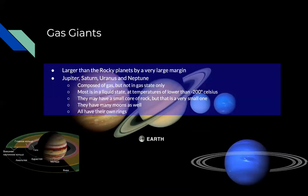Moving on to the gas giants. These are much bigger than the rocky planets by a big margin. You can see in this background picture that Earth is tiny compared to Jupiter and Saturn. They are mostly composed of gas, but most of the gas is in a liquid state. On Earth, what makes up the gas giants would be gases — hence we call them gas giants — even though in the planets themselves, they're liquid. Does everyone understand?